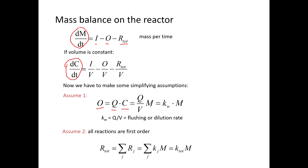We can express C as mass over volume, which gives us Q over V. Q over V is really important: flow has units like cubic meters per day, volume has units of cubic meters, so Q/V has units of one over time — which are the units of a first-order rate constant. We're going to call that first-order rate constant K_W, our flushing or dilution rate — the rate at which the chemical gets flushed out of the system with the water.